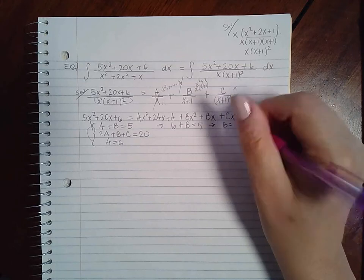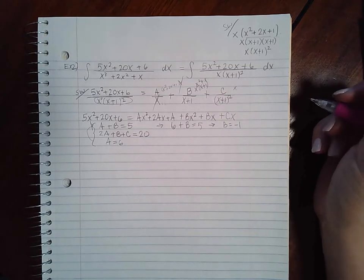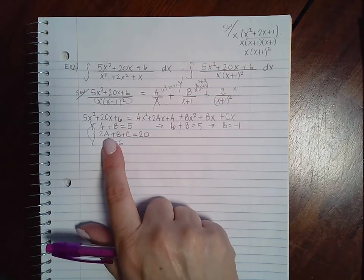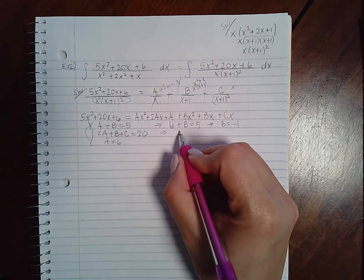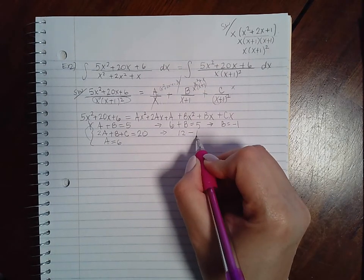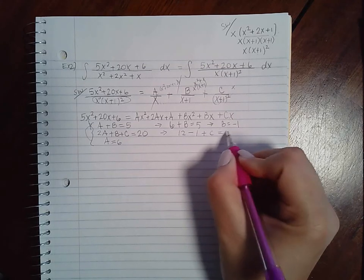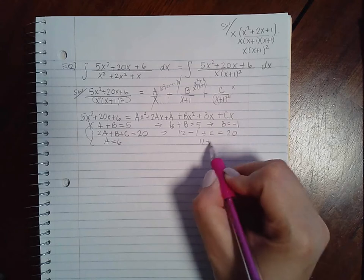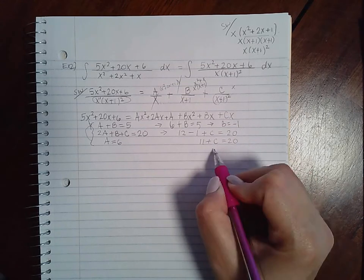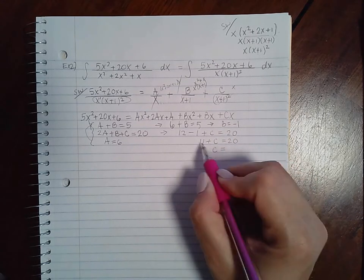And then I can plug both A and B into the second equation. So 2 times 6 would be 12, minus 1 plus C equals 20, or 11 plus C equals 20, or C equals 9.